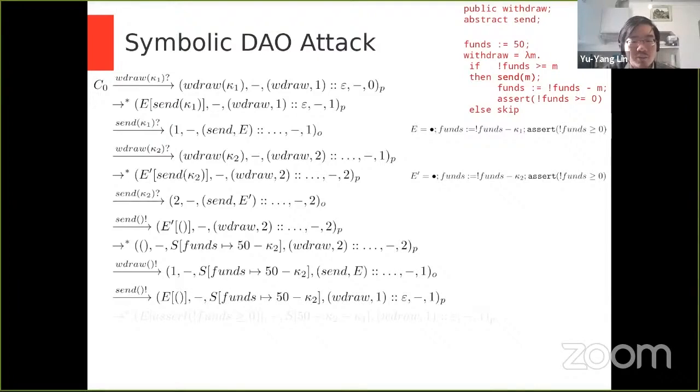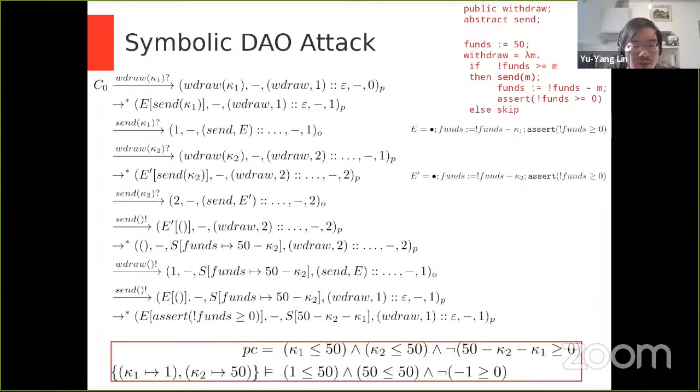And the proponent is able to evaluate all the way down to a value once again. After it returns, the proponent passes, by returning the proponent passes unit to the opponent and the opponent returns once again. At this point, the proponent is able to reach an assertion by evaluating. And in this case, the assertion has to prove that funds, the reference is greater than or equal to zero, where funds maps, in this case, to 50 minus kappa two minus kappa one. We thus have a path condition. Kappa one is less or equal to 50. Kappa two, which is the re-entrant call, less or equal to 50. And an assertion, which is 50 minus kappa two minus kappa one is greater than or equal to zero.